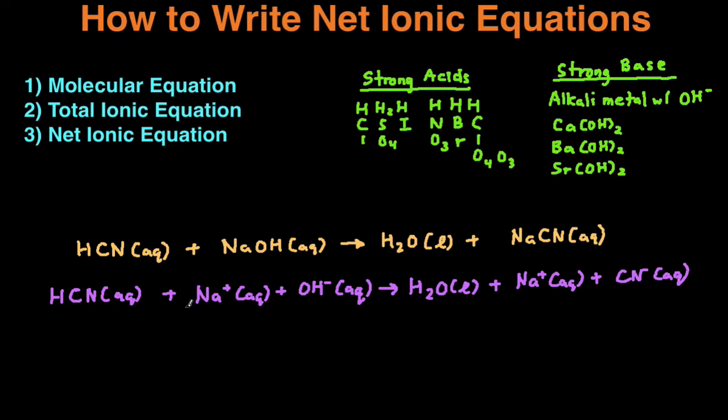So in this case, this would be the sodium. We can cross that out, and then everything else we can't cross out. So we just carry that down, and we get HCN aqueous plus OH- aqueous forms H2O liquid plus CN- aqueous. And then that is our net ionic equation.